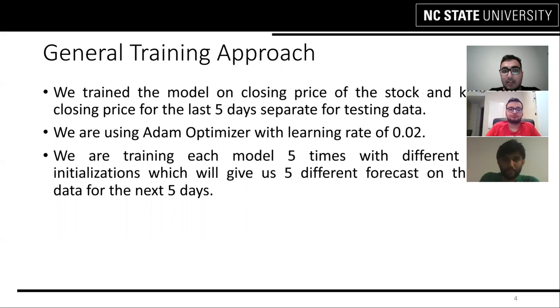The model is optimized using Adam optimizer at a max learning rate of 0.02. We chose this as Adam optimizer adaptively changes the learning rate based on the loss in the previous iteration. In this project, we are training our model with five different random weight initialization instances to make five different forecasts for the next five days and then we decide on the best prediction by taking the average.